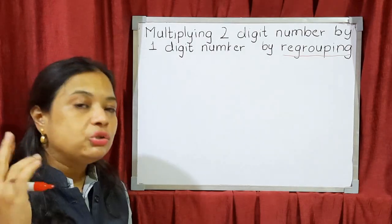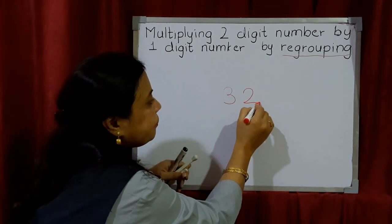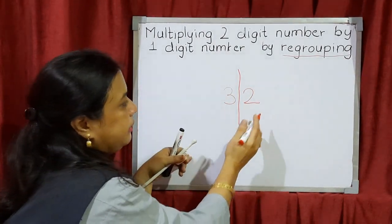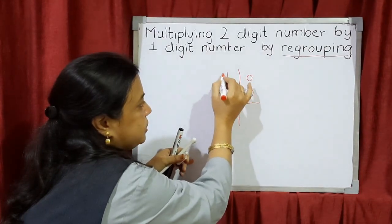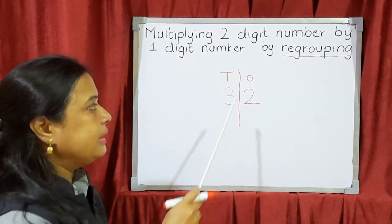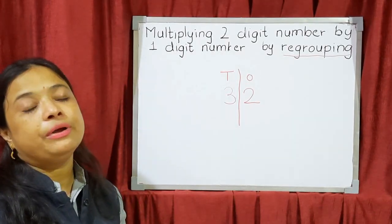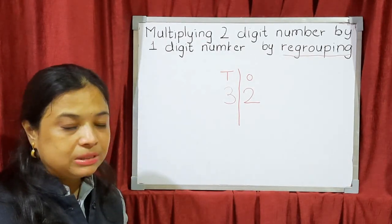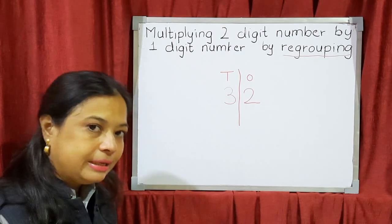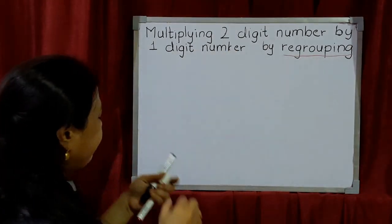Regrouping means when our answer is in two digits — suppose I say 32 — I have to regroup that number. I will split the number and place each digit according to its place value group: ones and tens. We did this in addition sums also — we put the ones digit in the ones column and the other digit in the tens column.